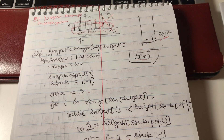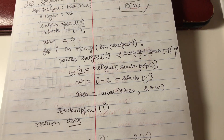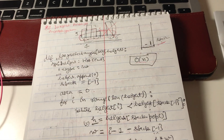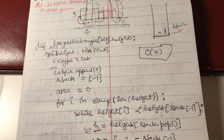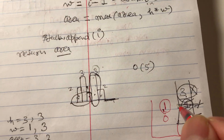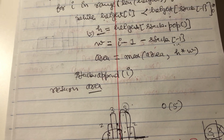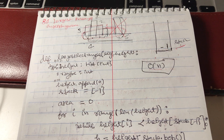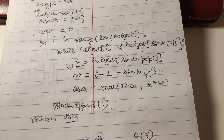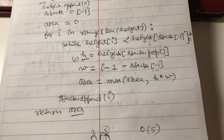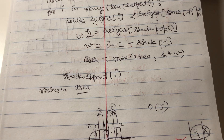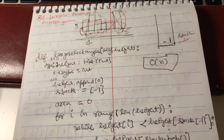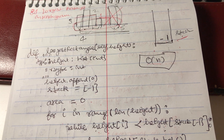At i=2, height is 2, which is less than the height at the topmost element of the stack, which is index 1 with height 4. The condition is satisfied, so we pop index 1 from the stack. The height becomes height at index 1, which is 4. The width is i minus 1 minus the new stack top, which is 0, giving width 1. The area at this point is 4.